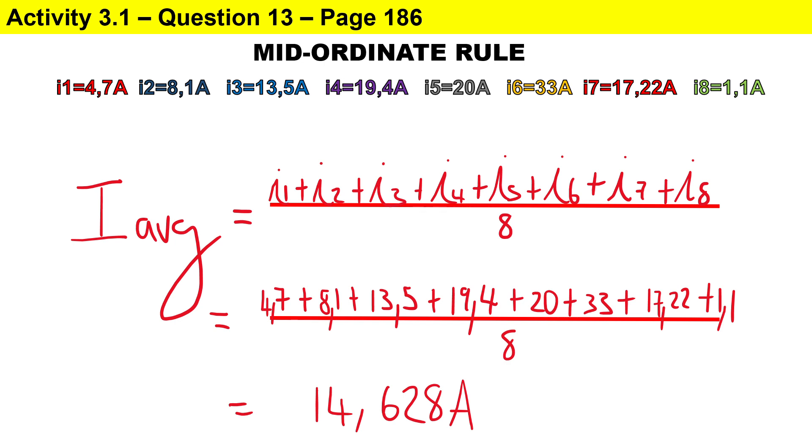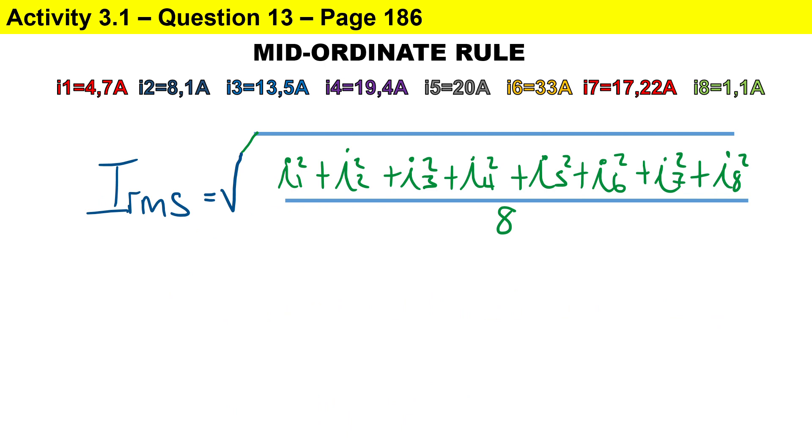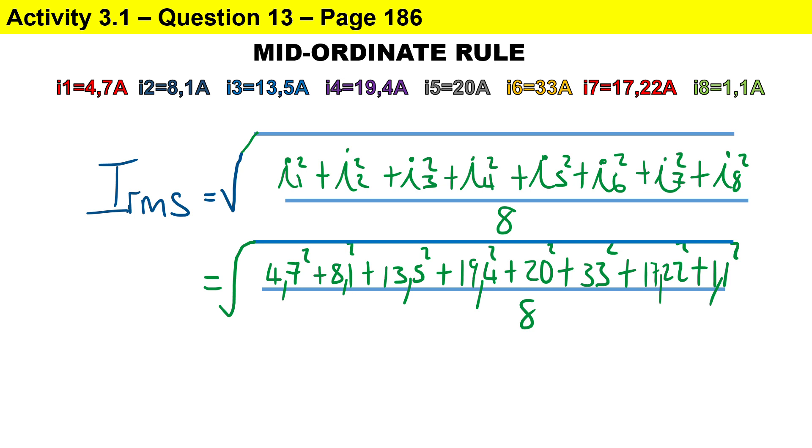To calculate the RMS value, it's square root over, and we square each mid-ordinate value and divide by the number of mid-ordinates. We substitute our values: 4.7 squared plus 8.1 squared plus 13.5 squared plus 19.4 squared plus 20 squared plus 33 squared plus 17.22 squared plus 1.1 squared, divided by 8, and we square root the answer. Therefore, the RMS value for our sine wave is 17.439 amperes.